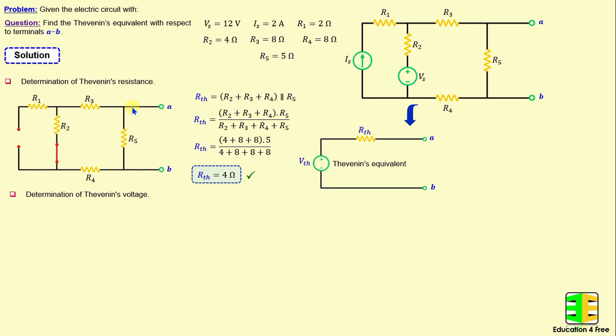The Thevenin voltage is basically the open circuit voltage calculated between terminals A and B. To find the open circuit voltage VOC, I will apply the mesh analysis method.